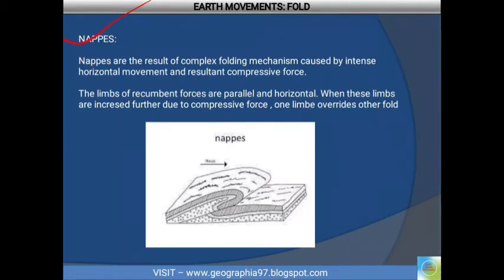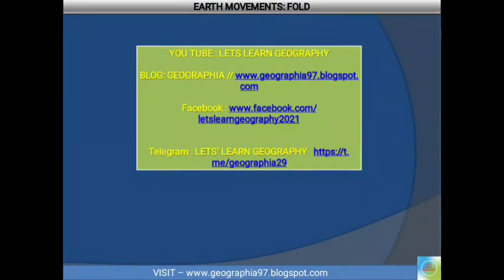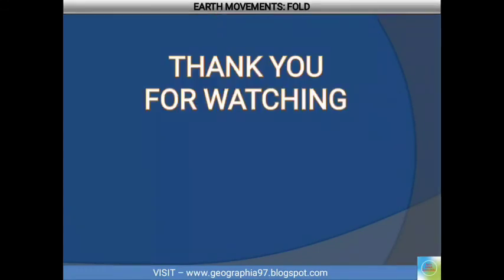The last type is nappes. Nappes are the result of the folding mechanism caused by intensive horizontal movement. Due to high compressive force, one limb overrides upon another — that is called nappes. This is all about this chapter. You can follow the channel and get PDFs. You can also join Telegram to get new notifications. If you liked this video, please press the like button and share with your friends. Thank you for watching.